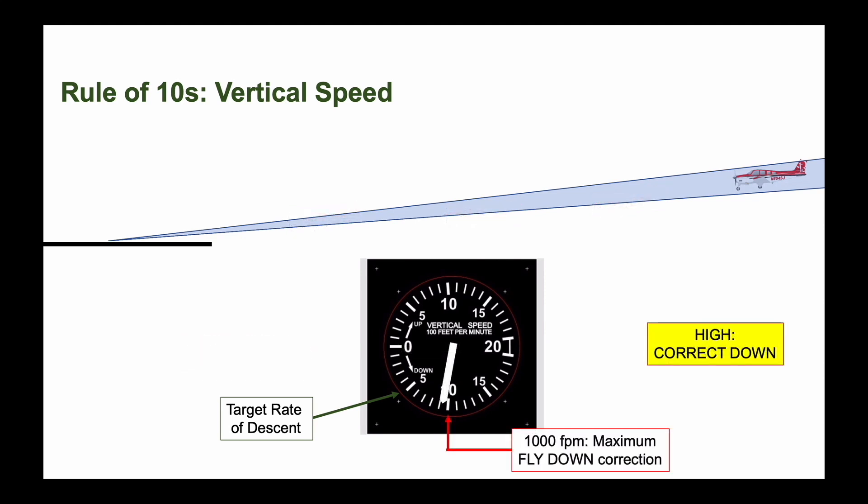If instead you're high, or outside the marker trying to intercept the glide slope from above, accept no steeper than 1000 feet per minute. About 500 feet per minute more than normal.